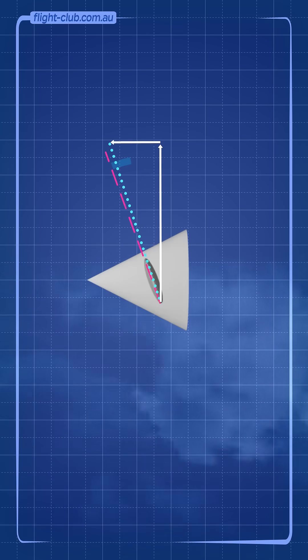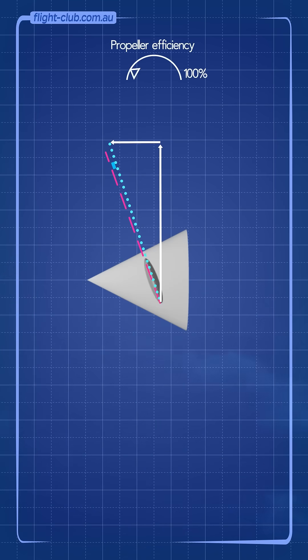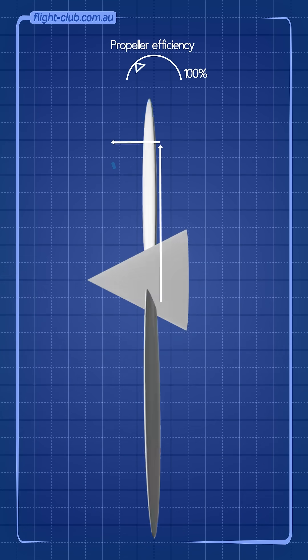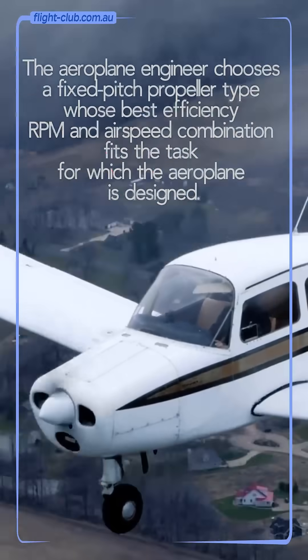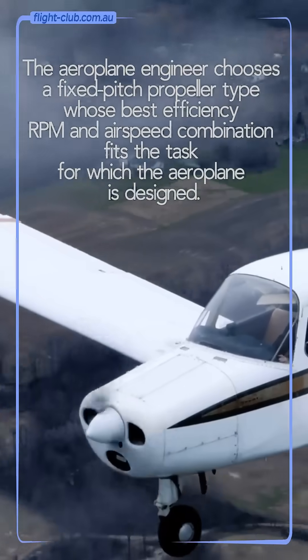At some higher airspeed, the angle of attack is such that little thrust is produced. Thus, for a certain RPM, there is only one airspeed at which the fixed-pitch propeller is most efficient.